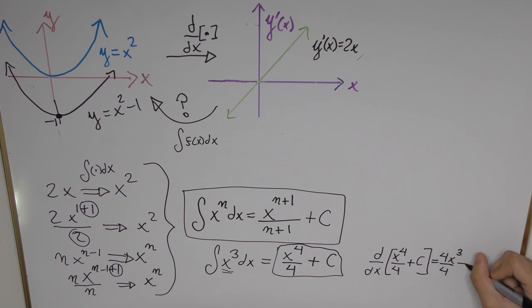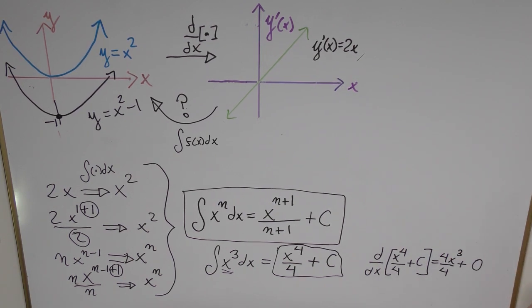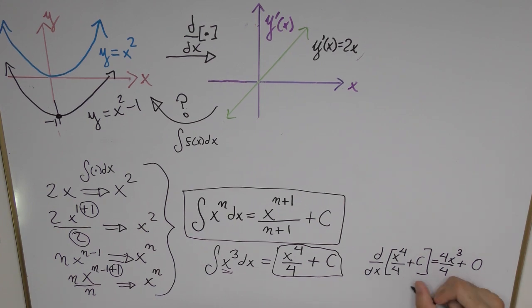And the constant is just going to become 0 because we know the derivative of the constant is 0. So that means when we cancel out that 4 we just get x cubed and that's exactly the same thing we started with when we performed the integration.